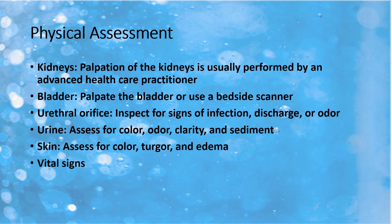It's difficult to do a physical exam on some organs of the GU system, so a lot of what we assess will be other body systems affected by the kidneys. We can't physically assess the kidneys because they're internal, but higher-level healthcare providers can do some exams. To assess the bladder, we can palpate it to see if it feels distended, and we can also use a bladder scanner to see how much urine is sitting in the bladder. Sometimes we'll do a post-void residual bladder scan — having the patient fully empty their bladder, then scanning to see how much urine remains. We can inspect the urethral orifice for signs of infection, redness, discharge, or odor, and we can inspect the urine itself.